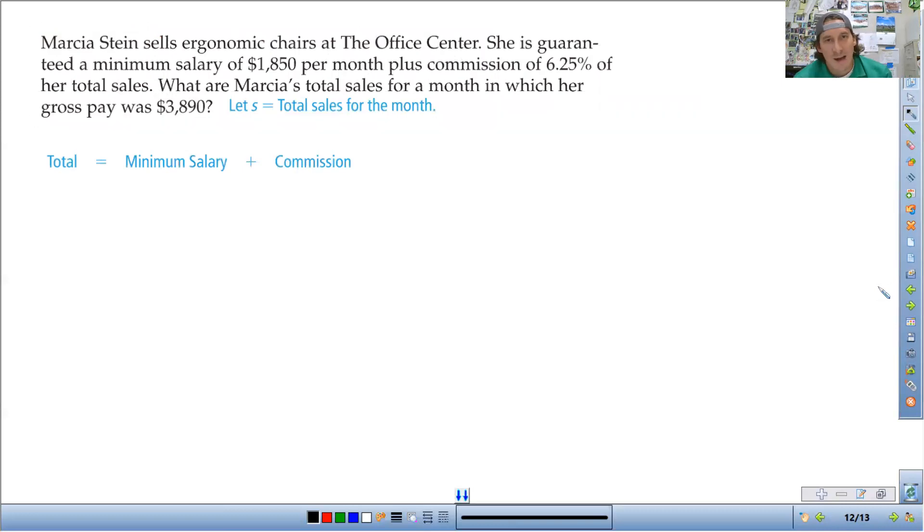So we have Marcia who sells ergonomic chairs at The Office Center. She's guaranteed a minimum salary of $1,850 plus a commission of 6.25%, and she has total sales of $3,890. We're going to work out an equation here, and we're going to find what her total sales for the month was. So we are looking for what are her total sales. So the total she's paid with sales and commission is going to go here. The minimum salary is in yellow, so that's going to go here.